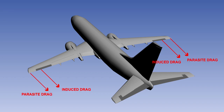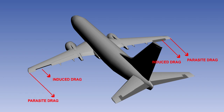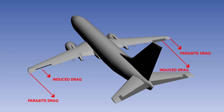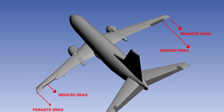With differential ailerons, the aileron linkage causes the up-going aileron to move through a larger angle of deflection than the down-going aileron. This increases the parasite drag on the up-going aileron and reduces it on the down-going aileron, thus reducing the difference in total drag between the two wings.